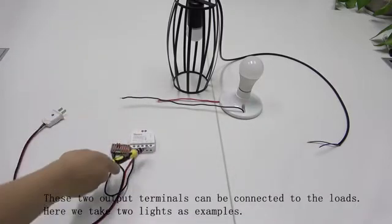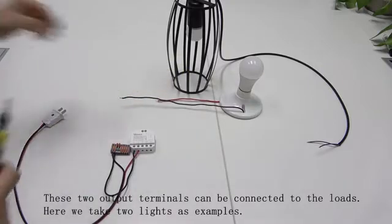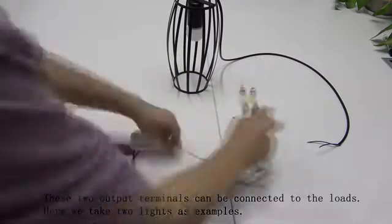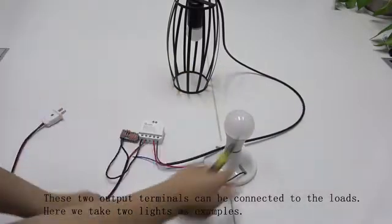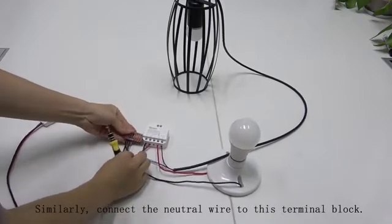These two output terminals can be connected to the nodes. Here, we'll take two lines as example. Similarly, connect the neutral wires to this terminal block.